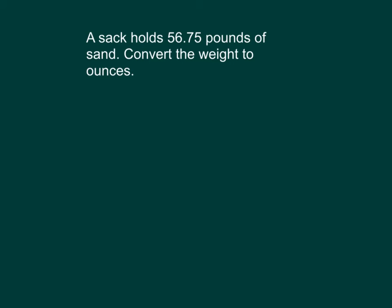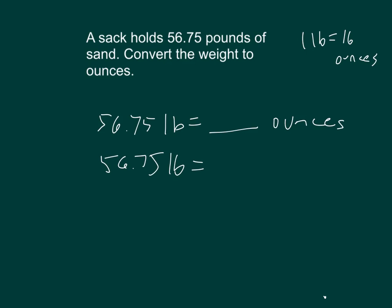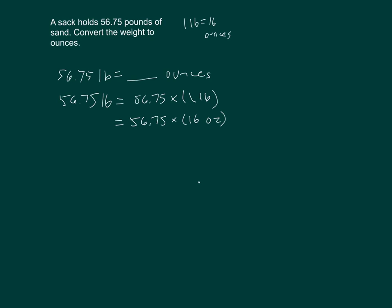A sack holds 56.75 pounds of sand. Convert the weight to ounces. I know that 1 pound equals 16 ounces, so I'll use that knowledge to go ahead and write and solve this problem. So that's 56.75 pounds equaling blank ounces. 56.75 pounds equaling 56.75 times 1 pound, equaling 56.75 times 16 ounces. And then we multiply that out.